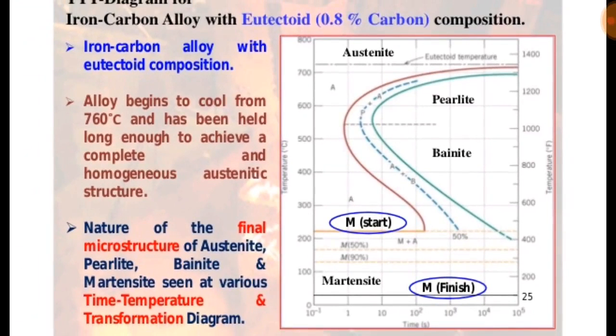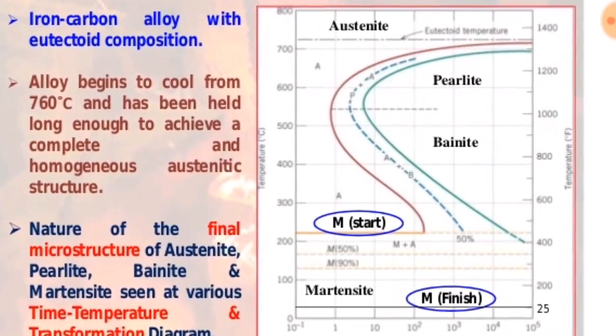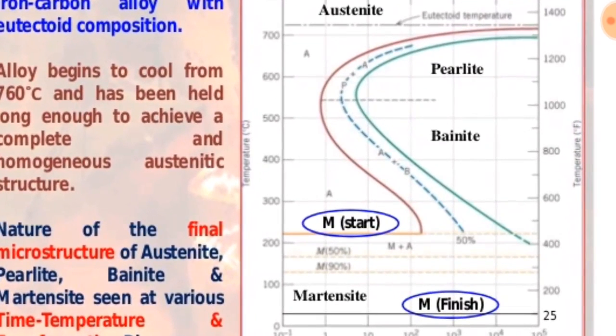An iron-carbon alloy with eutectoid composition begins to cool from 760 degrees Celsius and has been held long enough to achieve a complete and homogeneous austenitic structure.